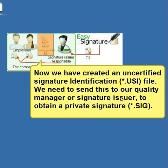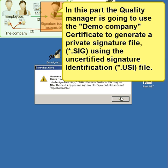We have now created an uncertified signature identification file. We need to send this to our quality manager or signature issuer to obtain a private signature. The quality manager will use the demo company certificate to generate a private signature file from the uncertified signature identification file.